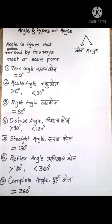Second type is acute angle. The acute angle is the angle whose measure of angle is greater than 0 degree but less than 90 degree.